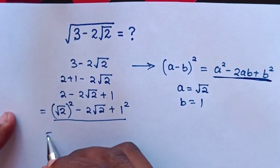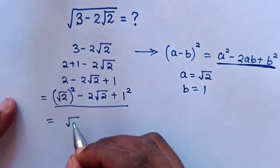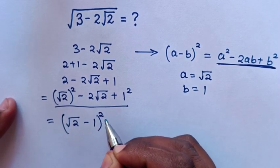From a and b, this will be equal to a minus b bracket square, it will be square root of 2 minus 1 bracket square.